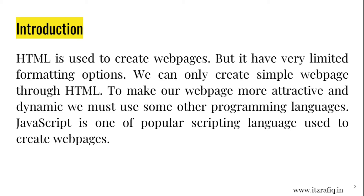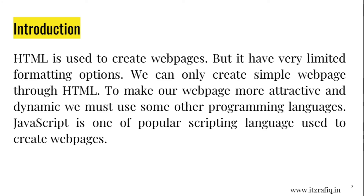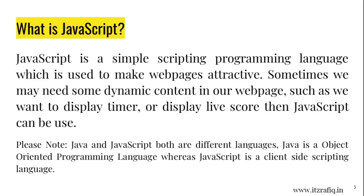JavaScript is one of the most popular scripting languages to create web pages. What is JavaScript? JavaScript is a simple scripting programming language which is used to make web pages attractive. Attractive means whenever you visit YouTube, you can see the most trending videos or whatever videos you used to like — those videos are displayed. This is done by some programming languages, and this is what is actually called attractive.